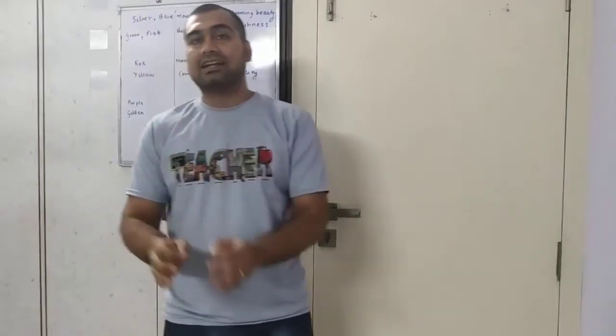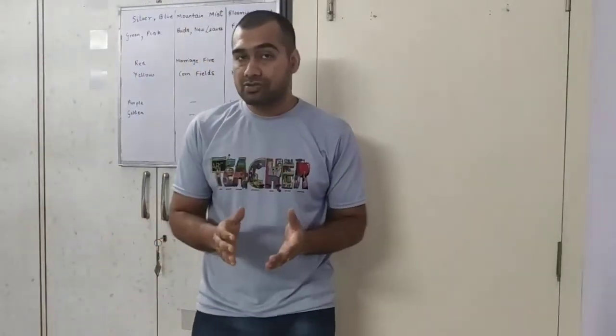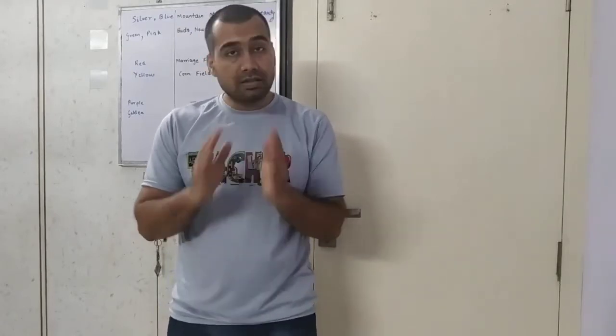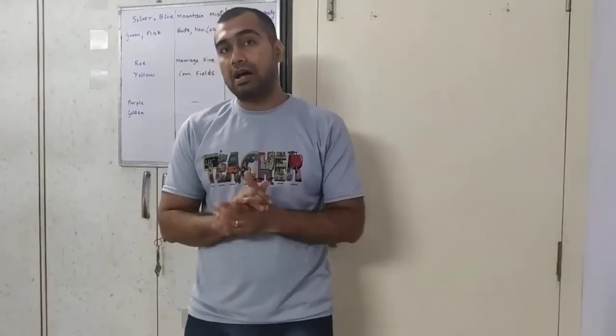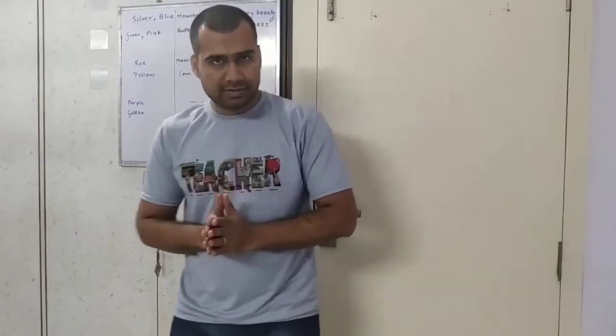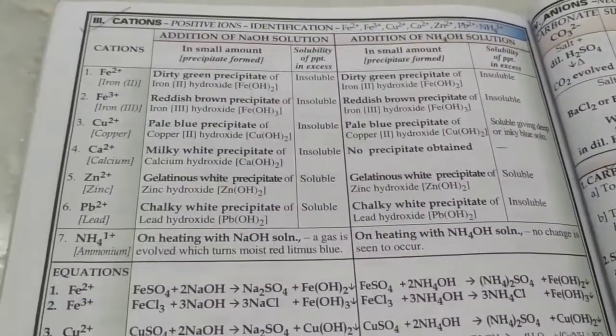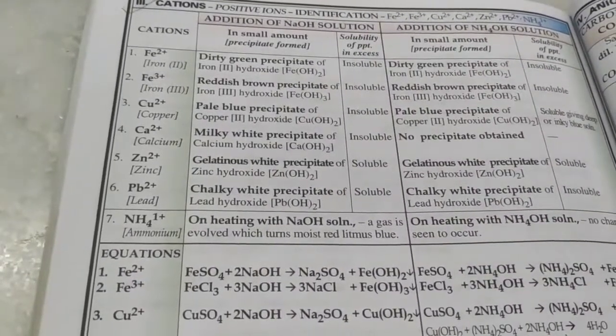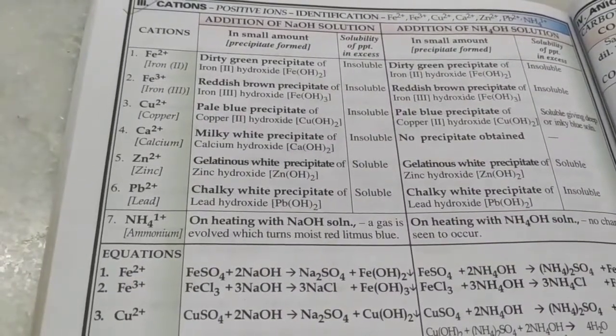We'll study 10th standard ICSE chemistry chapter 9, practical chemistry, the third and last part: identification of cations and anions, as studied in chapter 3b, analytical chemistry.